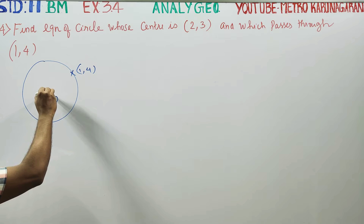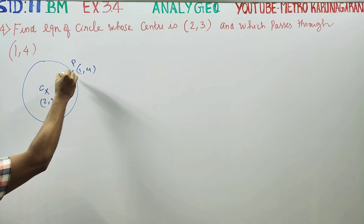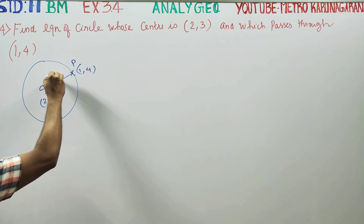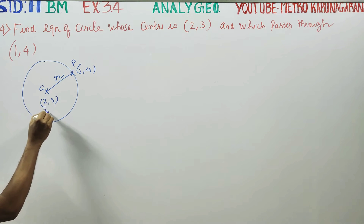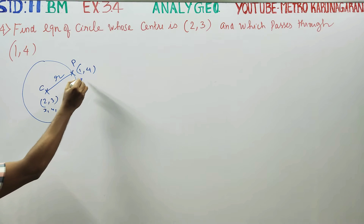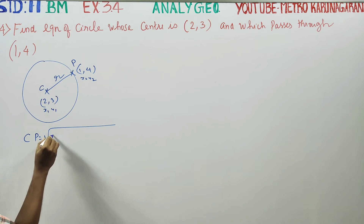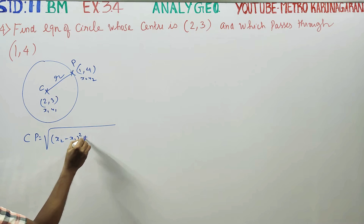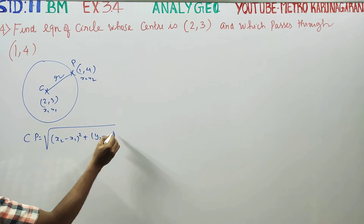From the center point to any point on the circle's circumference joined together, you get the radius. The radius is found using the distance formula. We have (x1, y1) and (x2, y2), so CP equals the distance formula: square root of (x2 minus x1) all squared plus (y2 minus y1) all squared.